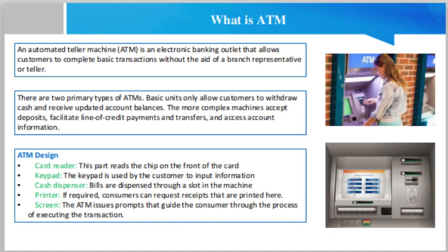There are mainly two primary types of ATMs. Basic units only allow customers to withdraw cash and receive updated account balances. The more complex machines accept deposits, facilitate line of credit payments and transfers, and access account information. To access the advanced features of the complex units, a user often must be an account holder at the bank that operates the machine.